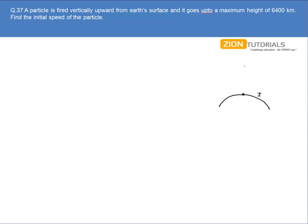At initial position one there is gravitational potential energy as well as kinetic energy that is provided to the particle. At final position two there will be only gravitational potential energy because it is the maximum height the particle has reached, so the velocity will be zero.